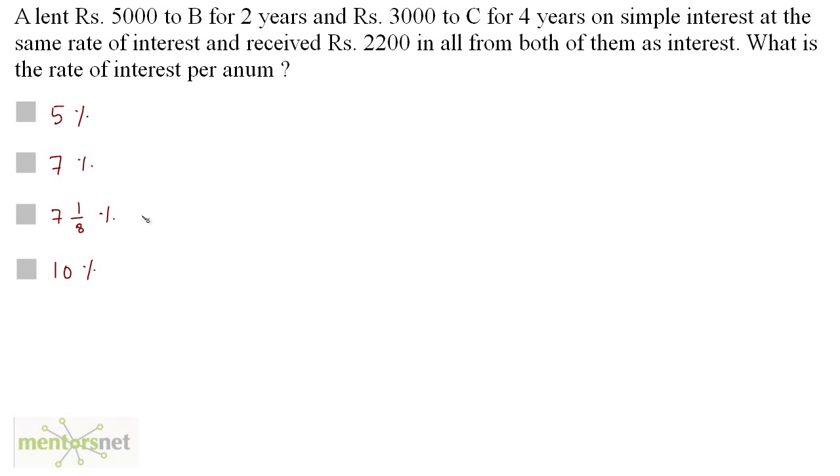A lent 5000 rupees to B for 2 years and 3000 rupees to C for 4 years on simple interest at the same rate of interest and received 2200 rupees in all from both of them as interest. What is the rate of interest per annum?